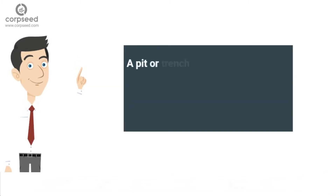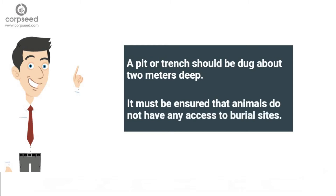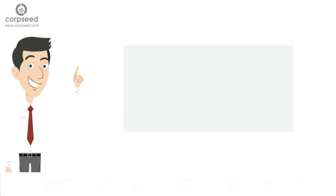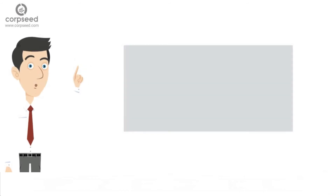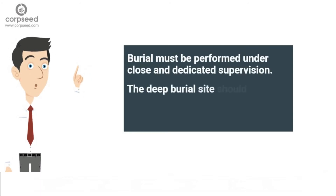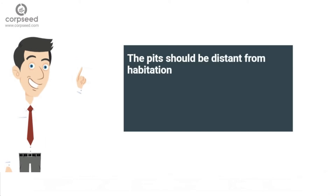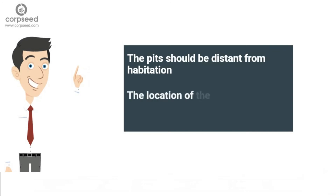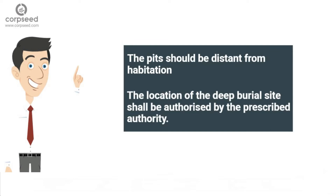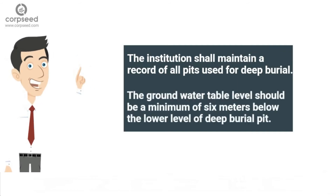Standards for Deep Burial: A pit or trench should be dug about 2 meters deep, half filled with waste, then covered with lime within 50 centimeters of the surface before filling. Animals must not have any access to burial sites; covers of galvanized iron or wire meshes may be used. On each occasion when wastes are added, a layer of 10 centimeters of soil shall be added. Burial must be performed under closed and dedicated supervision. The deep burial site should be relatively impermeable; no shallow well should be close to the site. Pits should be distant from habitation to prevent contamination of surface or ground water, not prone to flooding or erosion. The location shall be authorized by the prescribed authority, and records of all pits shall be maintained. The ground water table level should be a minimum of 6 meters below the lower level of the deep burial pit.